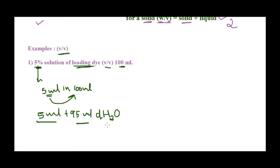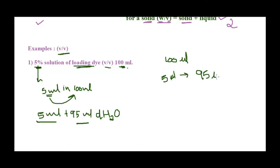You can do this with any unit. Say instead of 100 ml you need only 100 microliters of solution. You simply change the unit: take 5 microliters of gel loading dye and make it up to 100 microliters with solvent — the remaining 95 microliters. Mixing these gives you a 5% solution of loading dye.